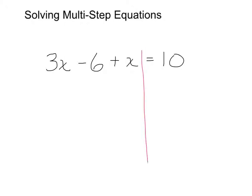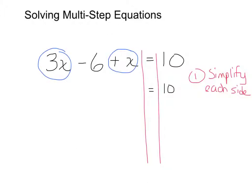The first thing I need to do before I can do anything else or start moving stuff around is to simplify each side. So when I look at 10, I can't do anything with the 10. But over here on the left side, I have 3x plus x, which combines to give me 4x, and then I have the minus 6 is equal to 10.